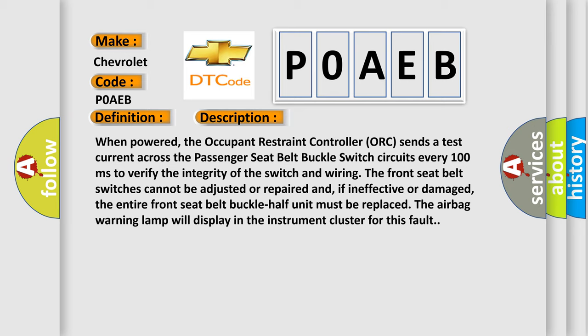The front seat belt switches cannot be adjusted or repaired and, if ineffective or damaged, the entire front seat belt buckle half unit must be replaced. The airbag warning lamp will display in the instrument cluster for this fault.